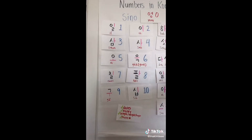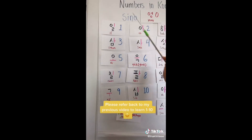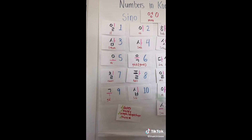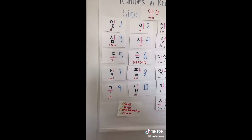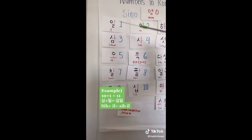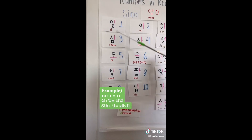Here are the Sino numbers that we covered last time: 1, 2, 3, 4, 5, 6, 7, 8, 9, 10, 0. And 11 would be 십일, 12 would be 십이, 13 would be 십삼, and on and on.